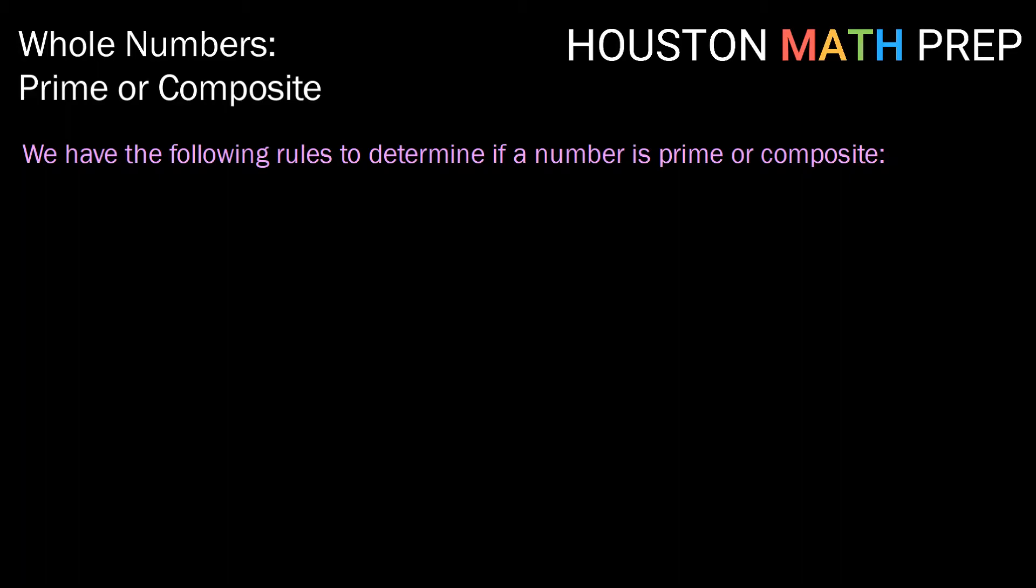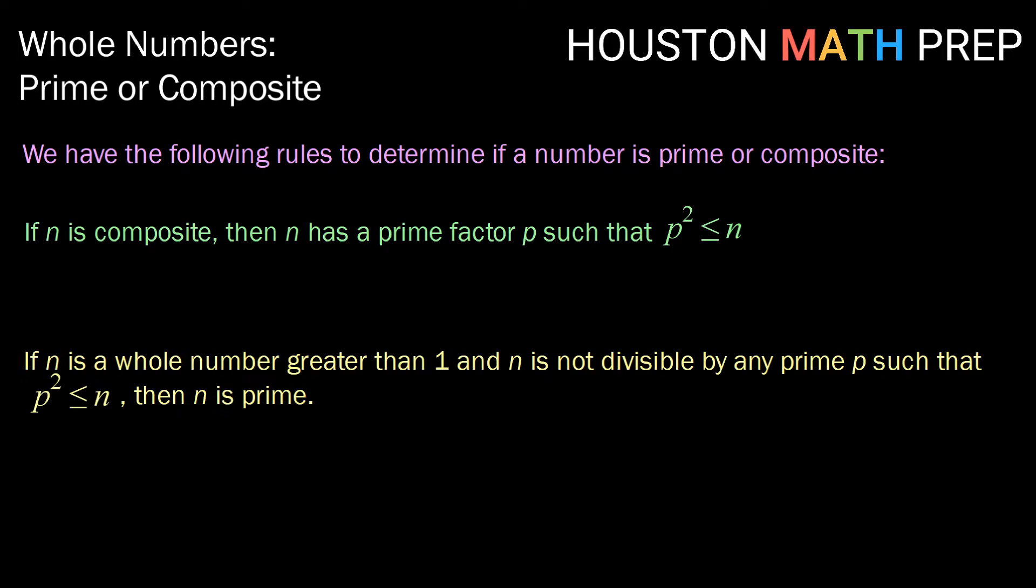We have the following rules to determine if a whole number is prime or composite. If n is composite, then it must be true that n has a prime factor p such that p squared is less than or equal to n. If that is not true, then we can say that that whole number is prime.